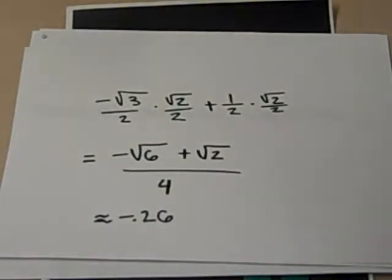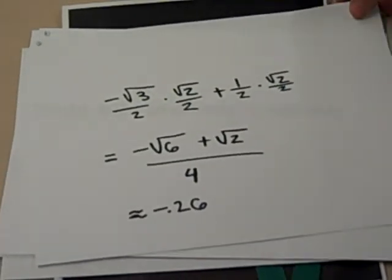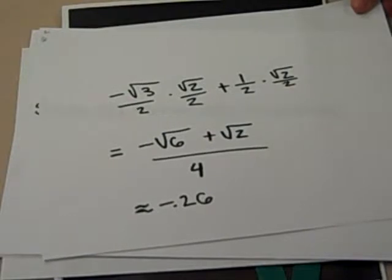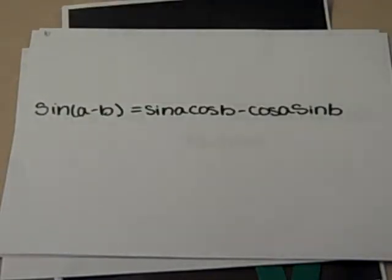Now to find sine. Finding sine is a similar process. The only thing that changes is the formula we use. This time, we'll use sine A minus B equaling sine A cosine B minus cosine A sine B.